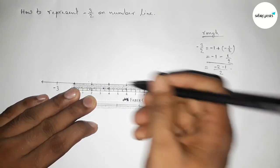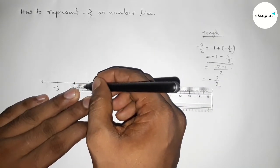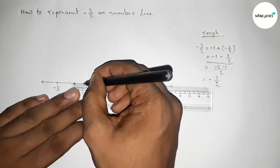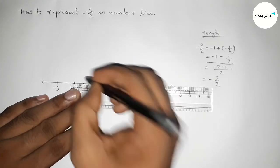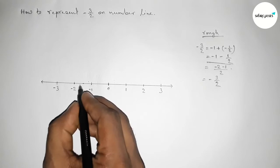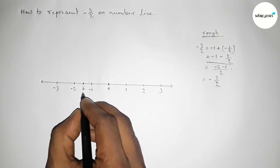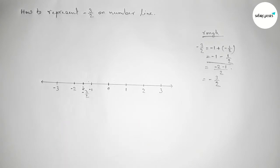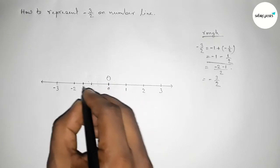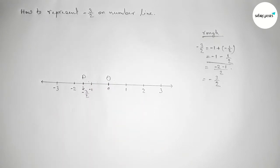So here the half between minus one and minus two equals to this. So this is the middle between minus one and minus two. So this one equals to minus three by two on number line. Now taking here point O and here taking point P.